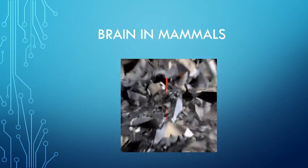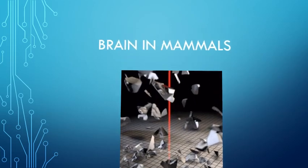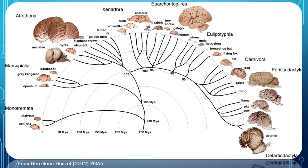Now let us see the brain in mammals. The mammalian brain has been shown for different orders. You can see the brain of platypus, rat, human, cat, dog, cow, and dolphin. You can see ridge-like structures in all these brains, though some of them are smooth.